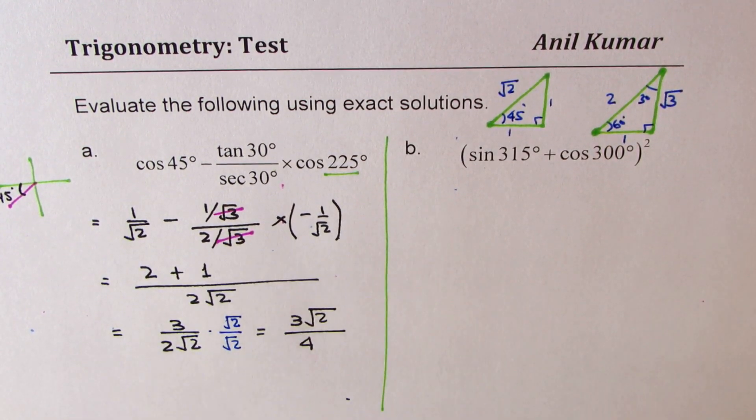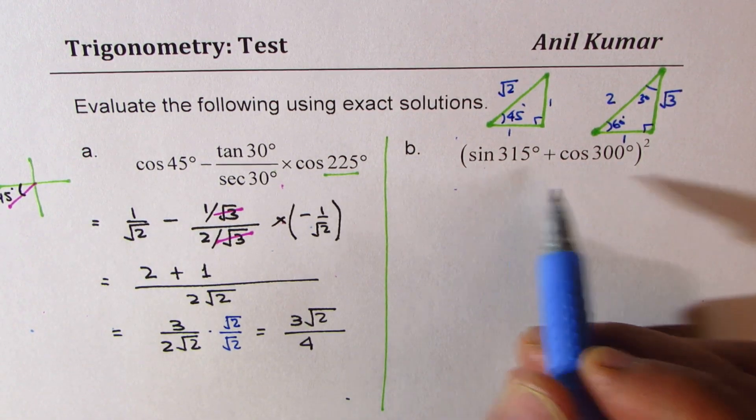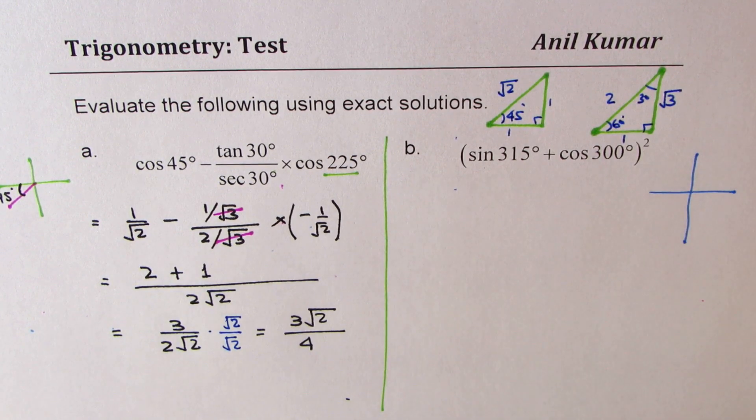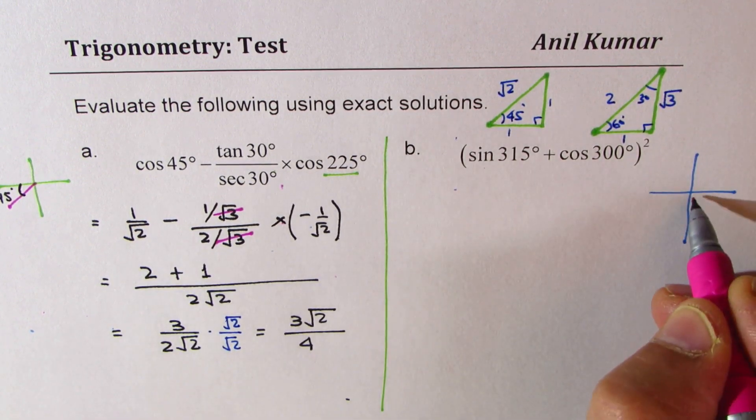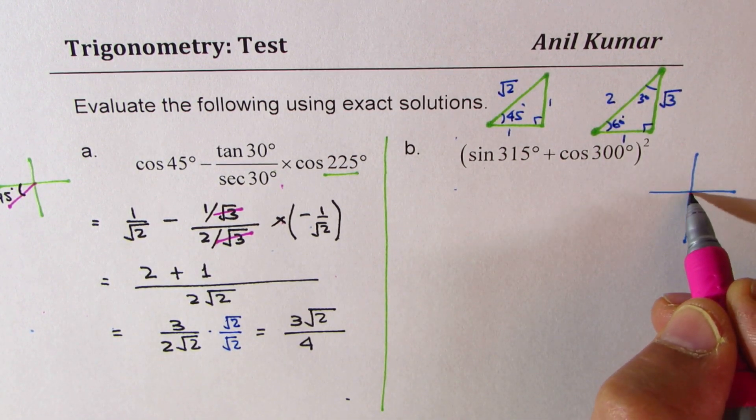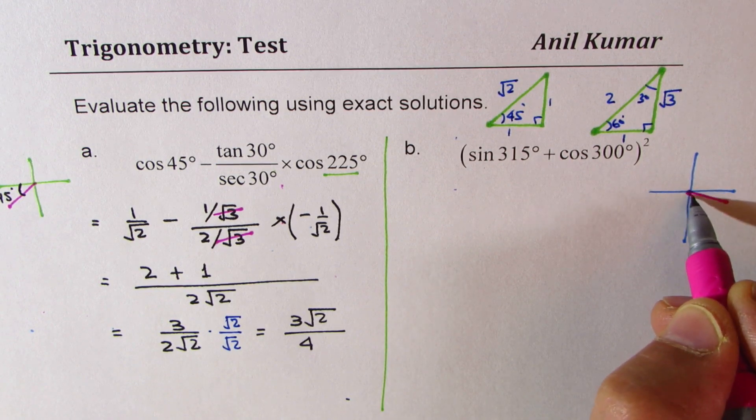Now let's do the next one. We have sine of 315 and cos of 300. Both are in quadrant 4. So 315 and 300.